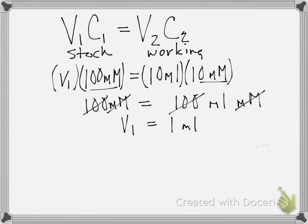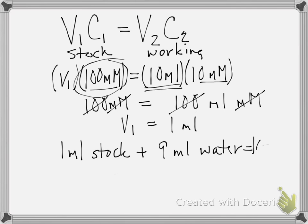So how do we use this? That means that we need 1 milliliter of our stock solution, and then we're going to make 10 mL. So 1 mL stock plus 9 mL water will equal 10 mL of a solution that's 10 millimolar.